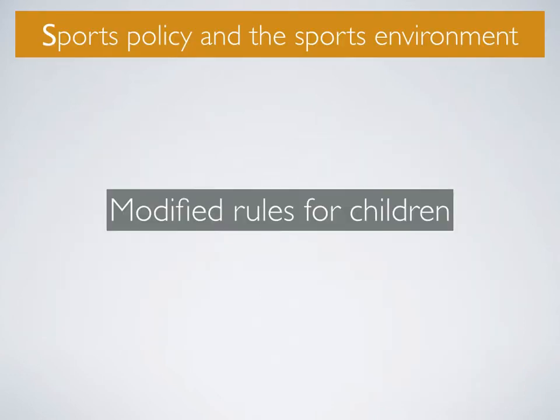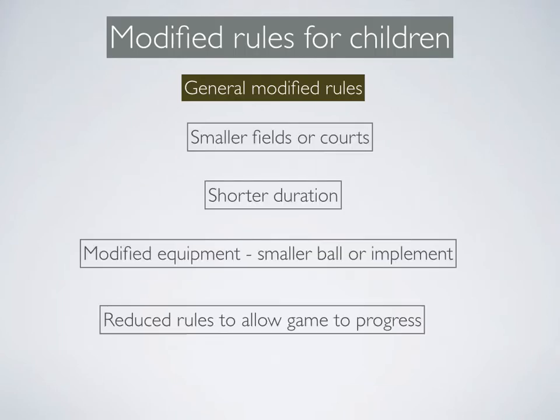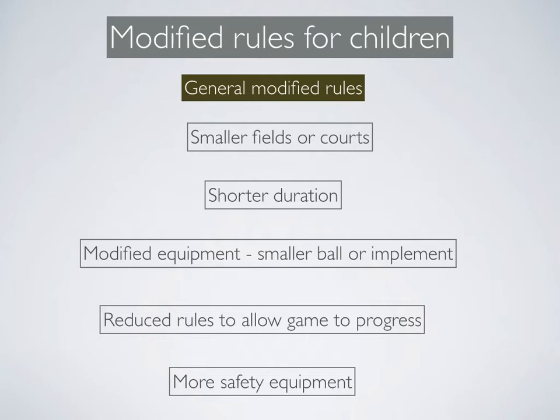Moving on to modified rules for children. A range of sports have been modified to allow children to participate more effectively. Generally, they include playing on smaller fields or courts, a shorter duration, modified equipment such as smaller balls or implements such as rackets or bats, reduced rules to allow the game to progress and be more fun for those involved, and including more safety equipment.